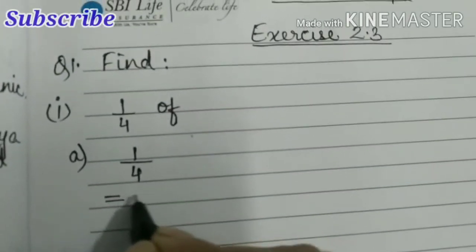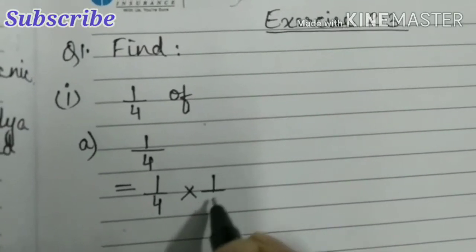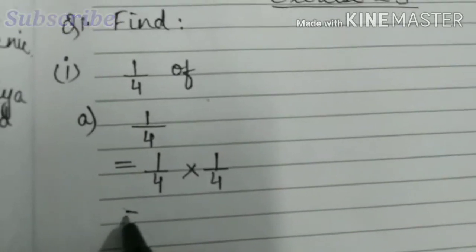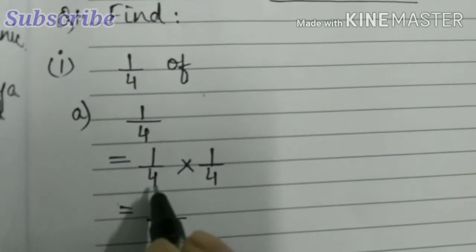That is equal to one-fourth times one-fourth. So the answer is 1 times 1 by 4 times 4, that is one-sixteenth.